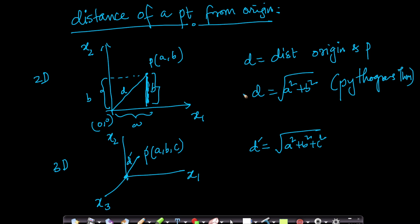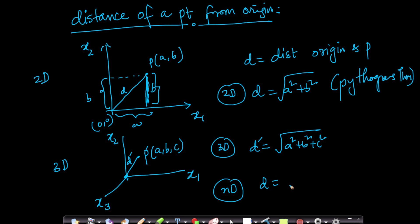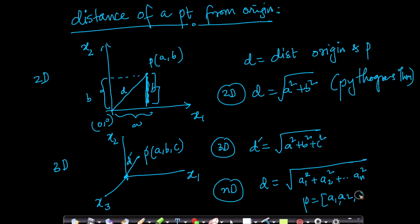Now, what about n-dimensional space? If I have an n-dimensional point, what is the distance of that point from the origin? If my point P has components A1, A2, A3, ..., An, then the distance is the square root of A1² + A2² + ... + An². What we learned in 2D and 3D can easily be extended to n-dimensional space.